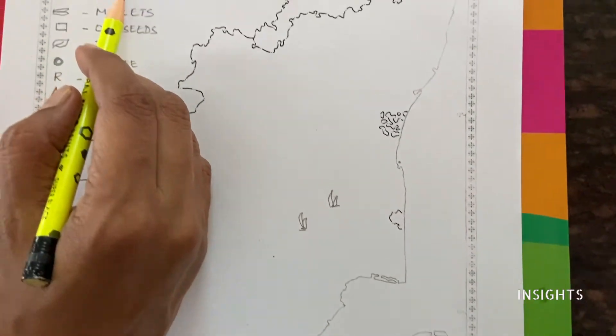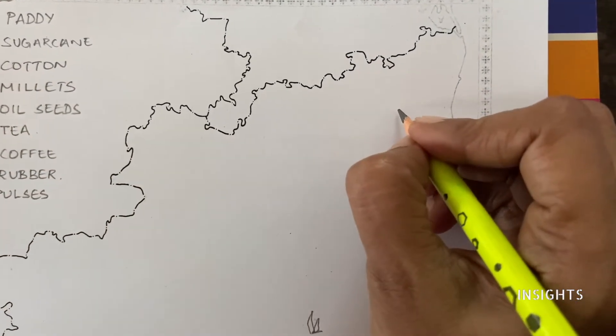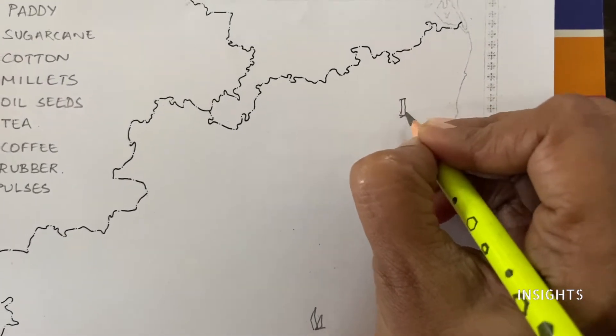Next, there is sugar cane. Sugar cane is grown here, Vellore and Kanchipuram in the area. So this is the sugar cane symbol.